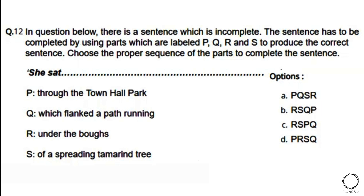Next language question: Complete the sentence by arranging parts P, Q, R, and S in the correct sequence. 'She sat ____.' P: through the town hall park; Q: which flanked a path running; R: under the boughs; S: of a spreading tamarind tree. Options: a) PQSR, b) RSQP, c) RSPQ, d) PRSQ. The right answer is option B — she sat under the boughs of a spreading tamarind tree, which flanked a path running through the town hall park.